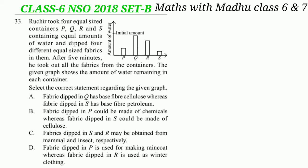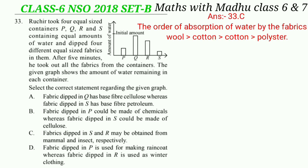So fabrics dipped in container P is cotton, Q is polyester, R is silk and S is wool. Wool is obtained from a mammal, that is sheep, and silk is obtained from an insect, which is silkworm. So the correct answer will be option C: fabrics dipped in S and R may be obtained from mammal and insect respectively.